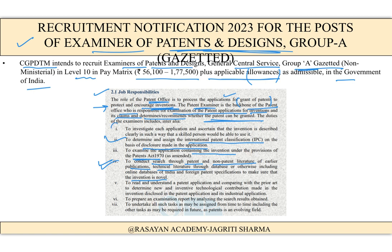The examiner also determines and assigns international patent classification on the basis of disclosure made in the application, investigates each application, and ascertains that the invention is described clearly enough that a skilled person will be able to use it — meaning the invention is not only scientifically sound but also useful. They also read and compare with prior art.